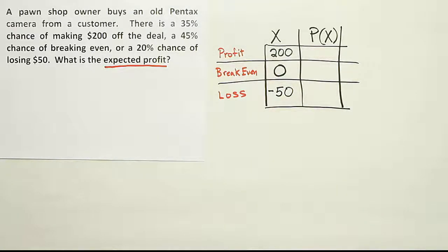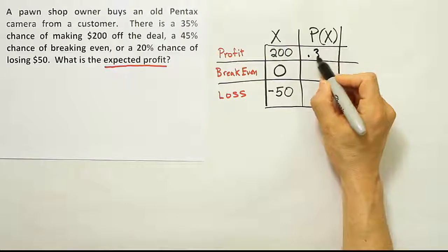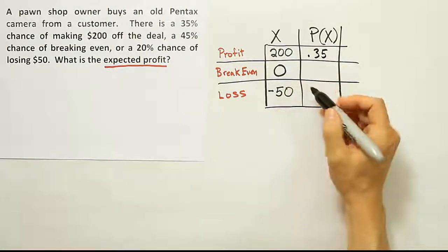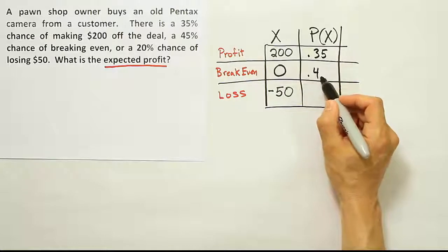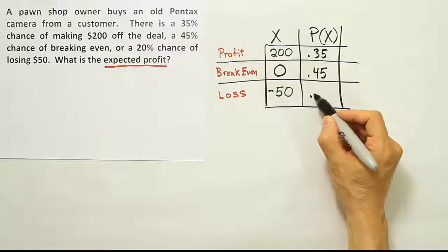Okay. Now we're going to fill in the probabilities, the corresponding probabilities. The probability that he makes profit, they say is 35%. As a decimal, that's 0.35. The chance that he breaks even is 0.45. And the chance that he loses is 0.20.